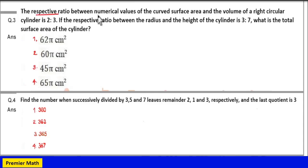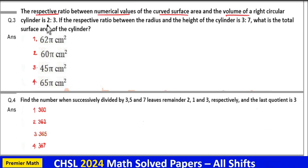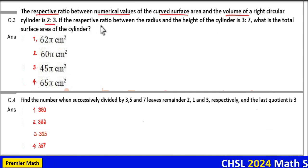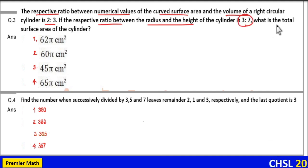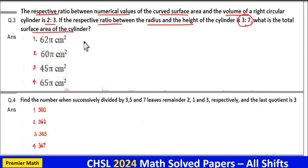The respective ratio between numerical values of the curved surface area and the volume of a right circular cylinder is 2:3. If the respective ratio between the radius and the height of the cylinder is 3:7, what is the total surface area of the cylinder?